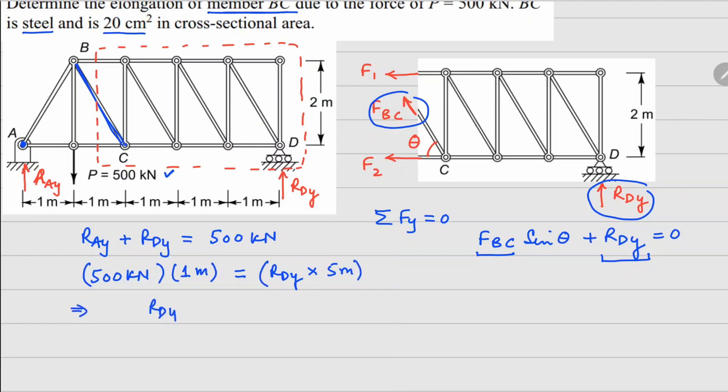We can find the value of rdy equals 100 kilonewtons. So once we have that, your fbc becomes minus 100 divided by sin theta kilonewtons.